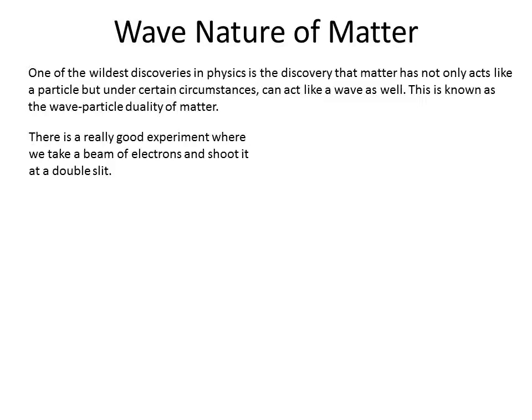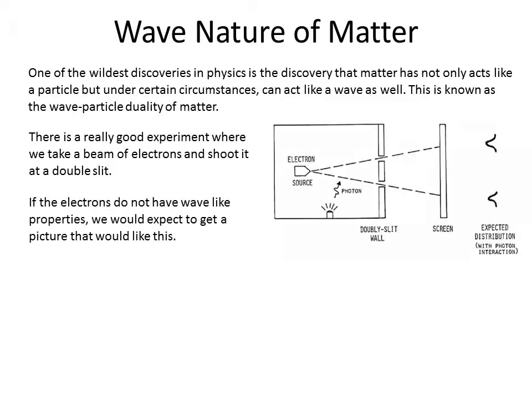How do we know this? There's a really good experiment, and it's hopefully very familiar to you. We're going to take a double-slit experiment, and instead of shooting light at it, we're going to shoot electrons. So we take an electron source, shine it through two slits, and we look at the pattern to see what we expect.